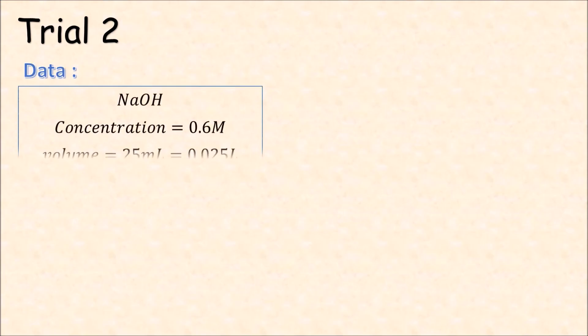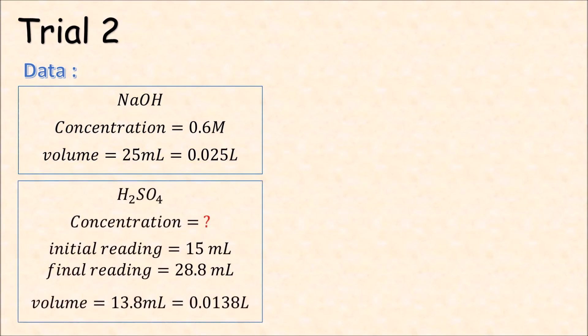In trial 2, we have the same volume of NaOH and same concentration. And for the sulfuric acid, the initial reading is 15 ml and the final reading is 28.8 ml. So we have the volume of sulfuric acid as 0.0138 liter. For step 1 and step 2, we will do the same as before.